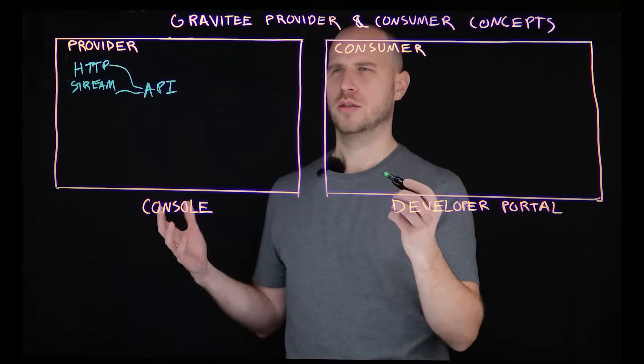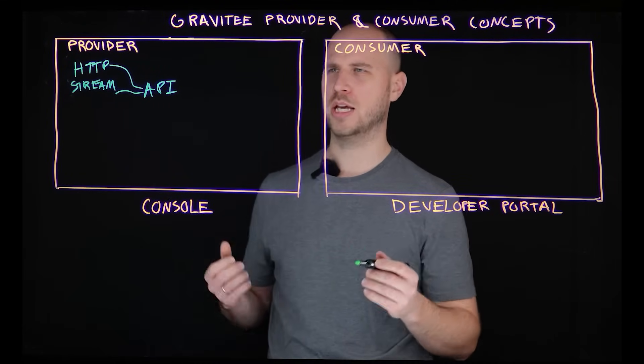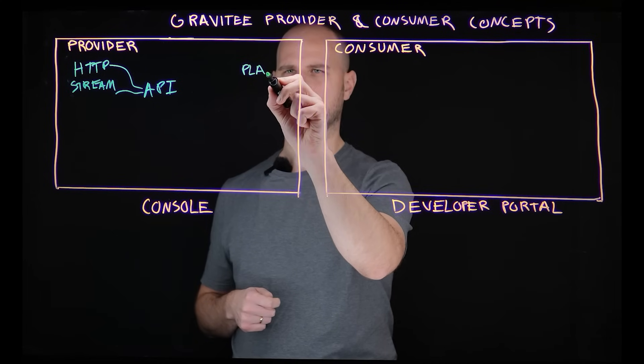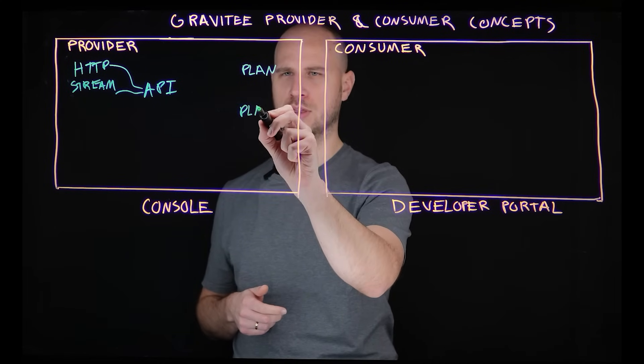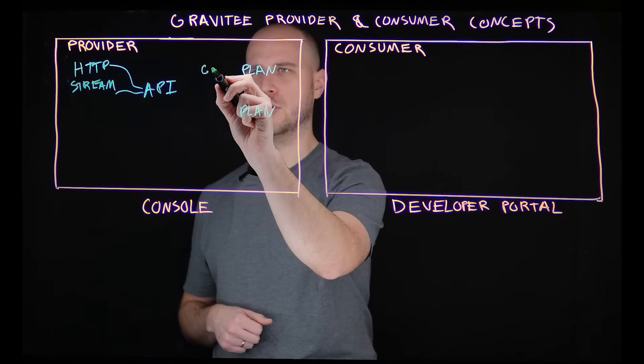So in Gravity, to have a consumer getting access and authenticating to the API, you need to have what is called a plan. So a plan, or effectively can be multiple plans with different authentication types, so maybe I'm gonna have a gold plan over here.